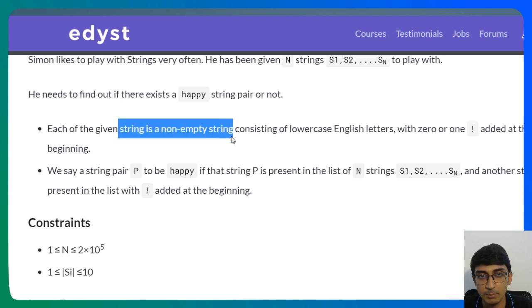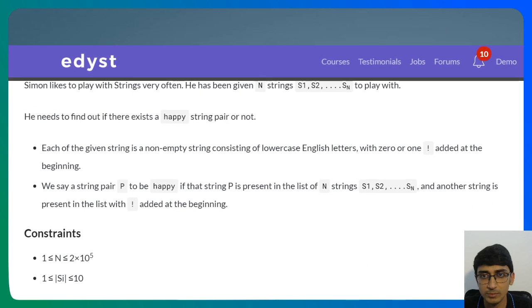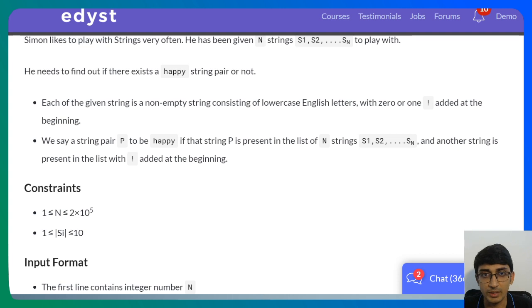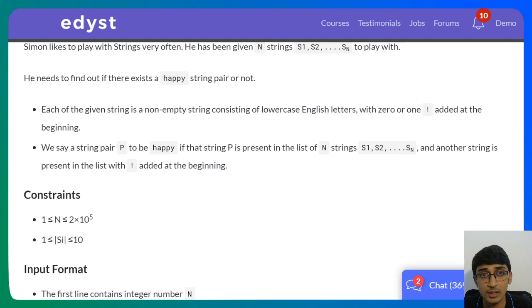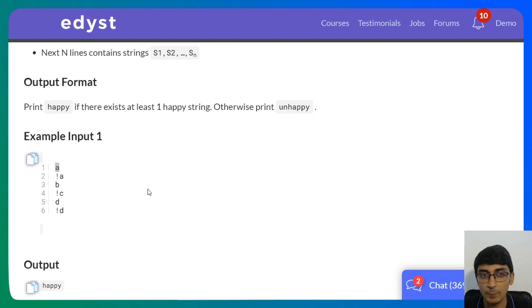Each of the given strings is a non-empty string consisting of lowercase English characters with zero or one exclamation mark added at the beginning. Basically, some words start with an exclamation mark and some don't. We say a string pair P is happy if that string P is present in the list and another string with exclamation added at the beginning is also present in the list.